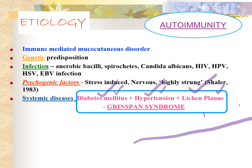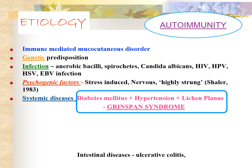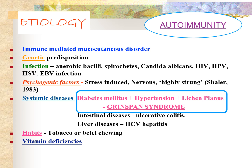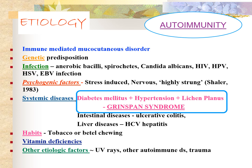Other systemic diseases associated with lichen planus include ulcerative colitis and hepatitis C virus. Certain habits such as tobacco chewing or betel chewing are also associated. Even smoking can initiate lesions of lichen planus. Vitamin deficiencies — specifically vitamin B1, B6, and vitamin C — have been said to be associated. Other factors include ultraviolet rays, other autoimmune diseases, and trauma, which can also cause development of lichen planus lesions.